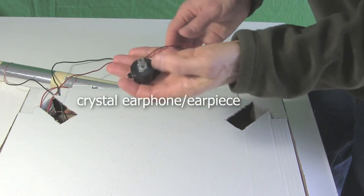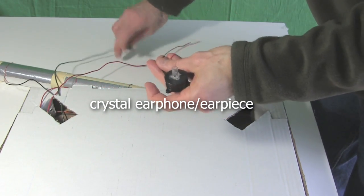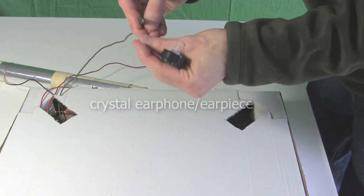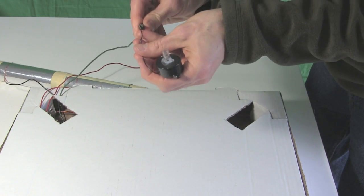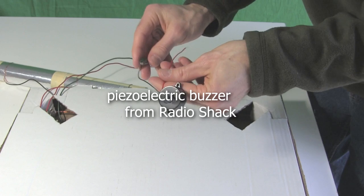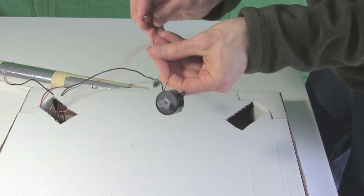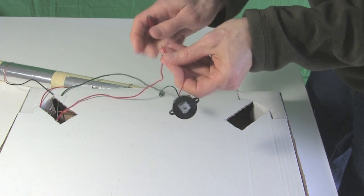Lastly the earpiece. For this circuit it has to be a crystal earphone. Also called a crystal earpiece. I'm using one I made myself by hot gluing a hollow tube to the opening of a piezoelectric buzzer. Connect the wires of the earphone to the wires you just ran out of the top of the box in the previous steps.